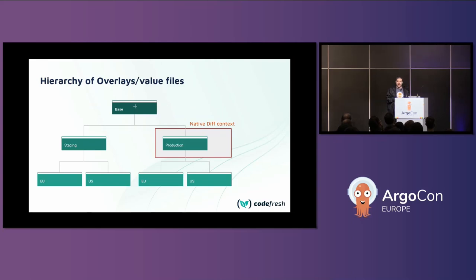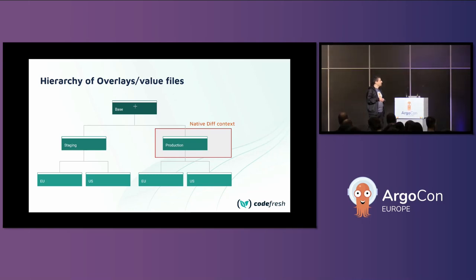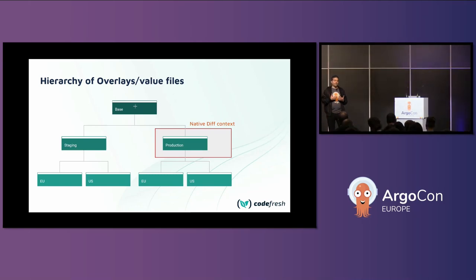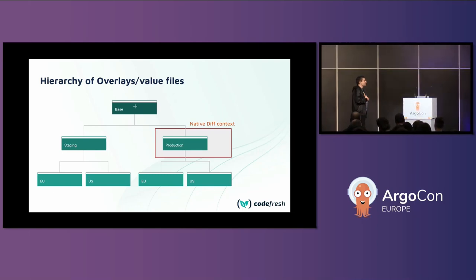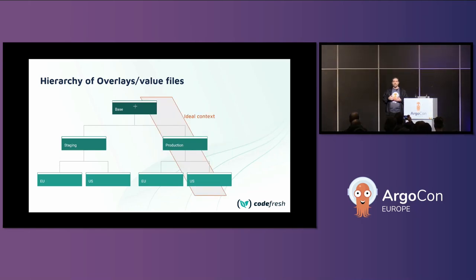I look at the pull request, it says replicas will go from 5 to 20. It looks good, I approve it, I merge it, and nothing happens. The problem is that many companies have a hierarchy of different values. For example, with Kustomize you have a base overlay and different overlays for two environments, each environment with its own regions. You can do the same with Helm values hierarchies.